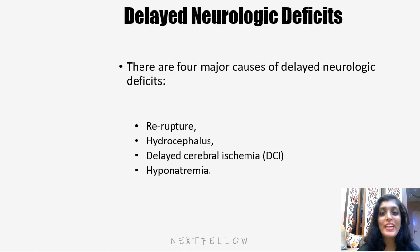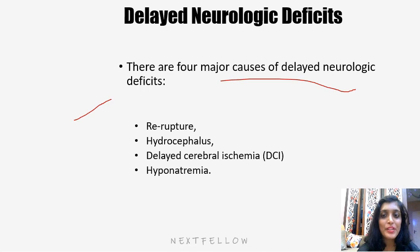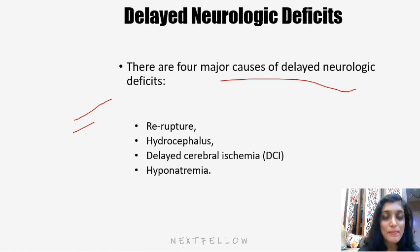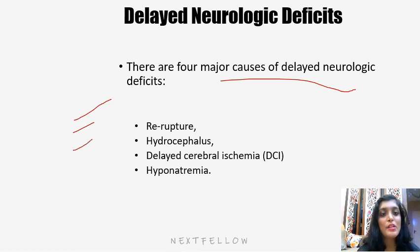There are four major causes of delayed neurological deficits: re-rupture — due to raised blood pressure, there may be re-rupture of the aneurysm after coiling; hydrocephalus — excess bleeding in the subarachnoid space may cause obstruction of the arachnoid villi and obstructive hydrocephalus; delayed cerebral ischemia; and hyponatremia. Hyponatremia in subarachnoid hemorrhage is usually due to syndrome of inappropriate ADH secretion — SIADH.